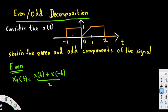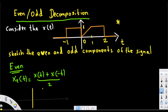x(t) is provided already so we don't have to worry about that. x(-t) is just the flip — it means we rotate the graph to the other side. Now let's go ahead and draw that.